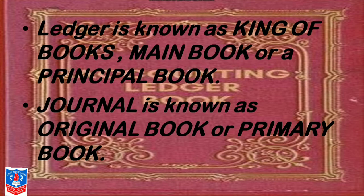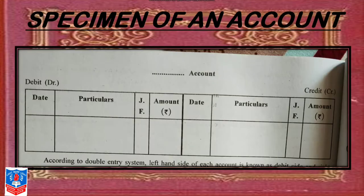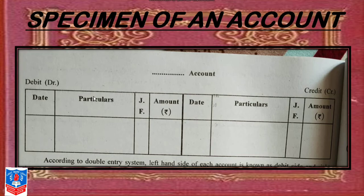Now, what is the specimen or format of ledger? This is something I have discussed with you earlier. Here the name is left blank because any account can be entered here. On the left-hand side you will see Debit, and on the right-hand side it is Credit. Your account will always have a T-shape. On the left-hand side the columns are: Date, Particulars, JF (Journal Folio number), and Amount in rupees. The same columns — Date, Particulars, JF, and Amount — appear on the credit side as well.